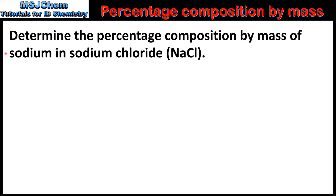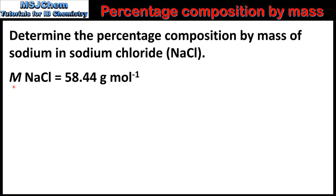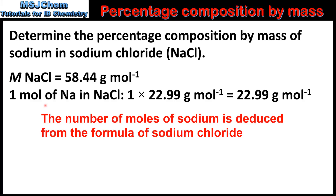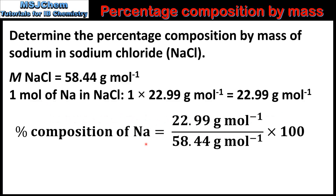In the third example we'll determine the percentage composition by mass of sodium in sodium chloride. The molar mass of sodium chloride is 58.44 grams per mole. 1 mole of sodium chloride contains 1 mole of sodium, so we multiply the molar mass of sodium by 1, which gives us 22.99 grams per mole. To calculate the percentage composition by mass of sodium we divide 22.99 by 58.44 and multiply by 100.